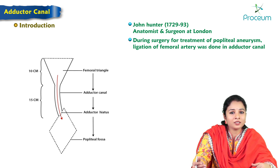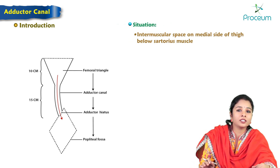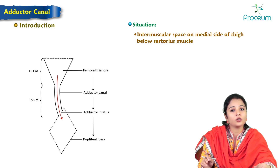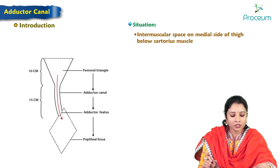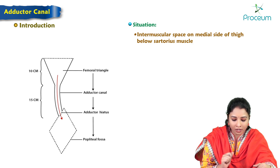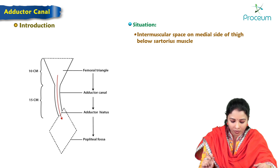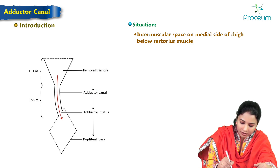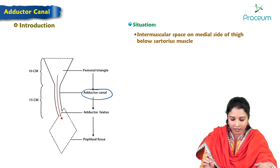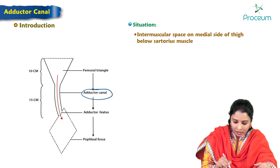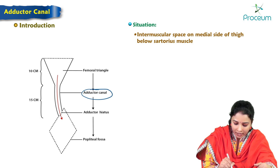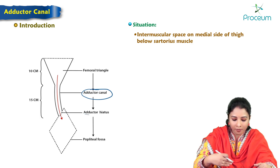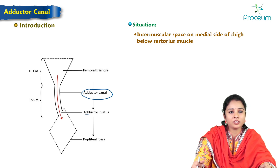The adductor canal is an intermuscular space on the medial side of the thigh, below the sartorius. It is the continuation of the femoral triangle above and opens into the popliteal fossa below. Its length is 15 centimeters, and it opens into the popliteal fossa via the adductor hiatus, continuing from the apex of the femoral triangle above.